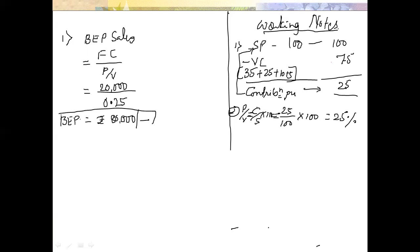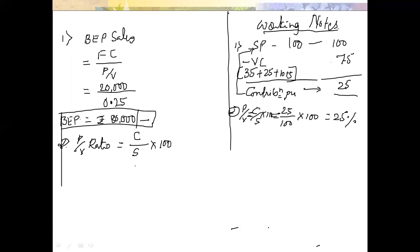Now point number two — PV ratio. The formula is contribution divided by selling price into 100. Contribution is rupees 25 and selling price is rupees 100, so PV ratio equals 25 divided by 100 into 100, which amounts to 25%.